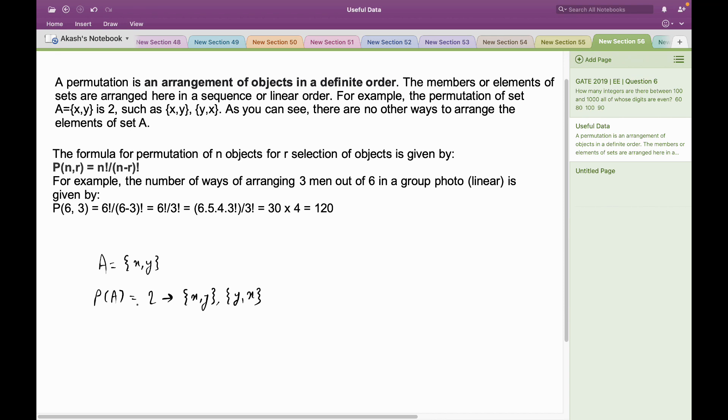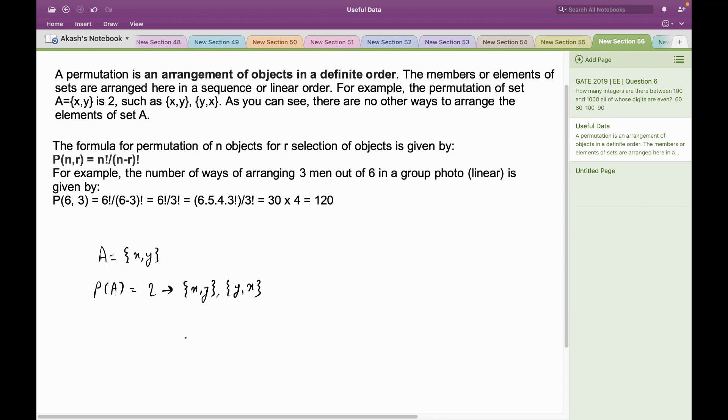In general, the formula for permutation of n objects for r selection of objects is given by P(n,r) = n! / (n - r)!.